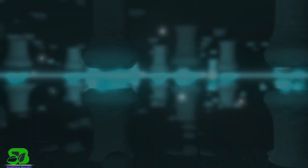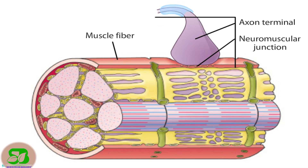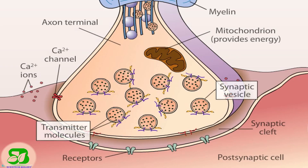Synaptic transmission begins when the nerve impulse reaches the presynaptic axon terminals. Depolarization of the presynaptic membrane initiates the sequence of events leading to transmitter release and activation of receptors on the postsynaptic membrane.